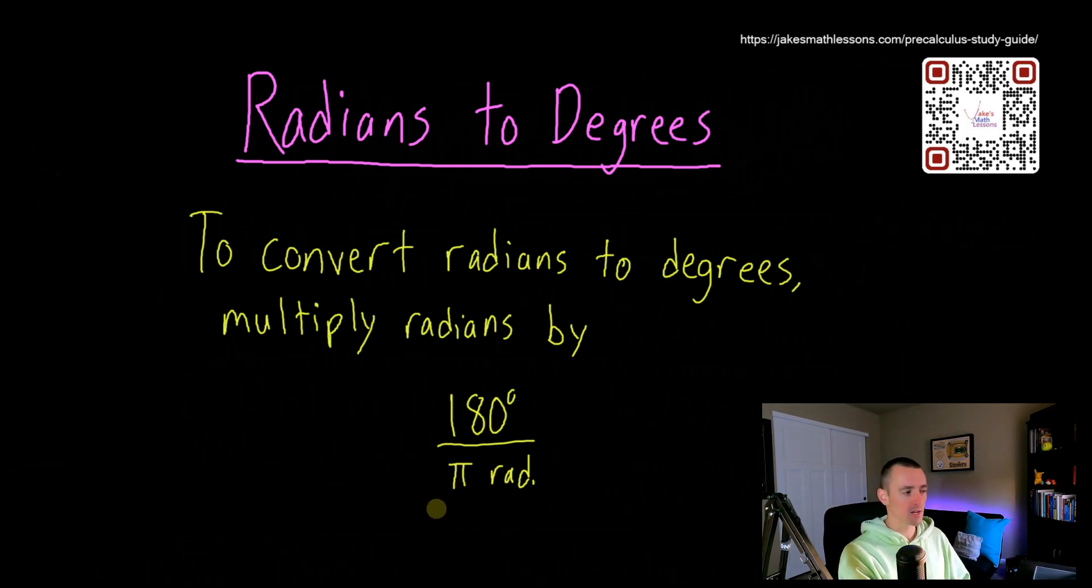So half a circle is 180 degrees, half a circle is also pi radians. So basically the idea there is multiplying some sort of a radian measure by 180 degrees divided by pi radians doesn't actually change the value of that angle measurement because 180 degrees is equivalent to pi radians.